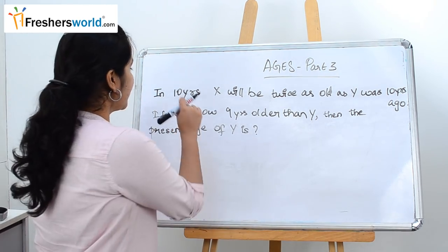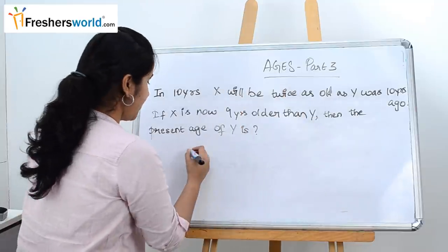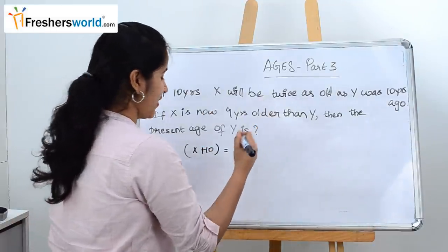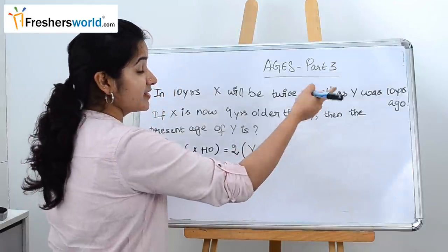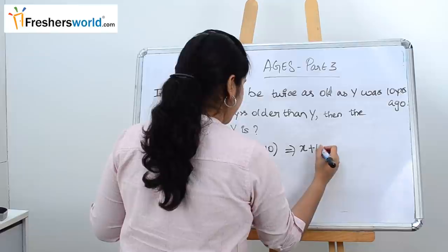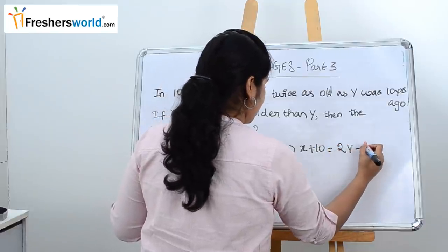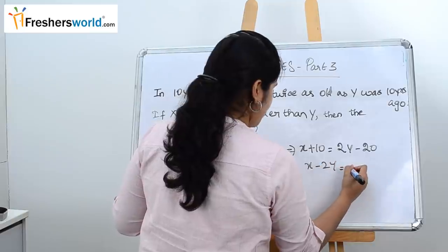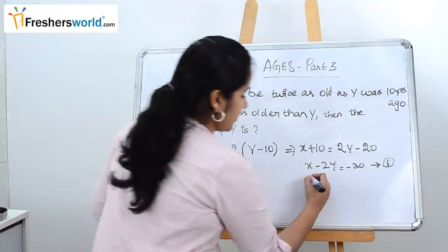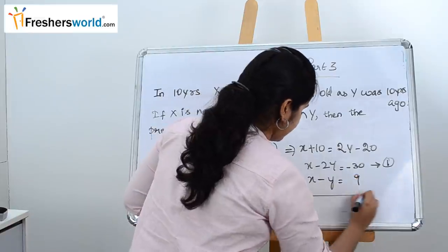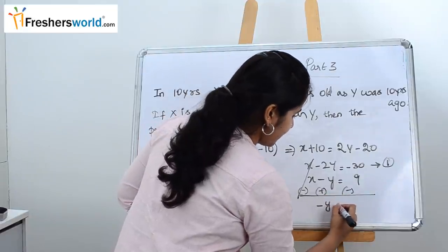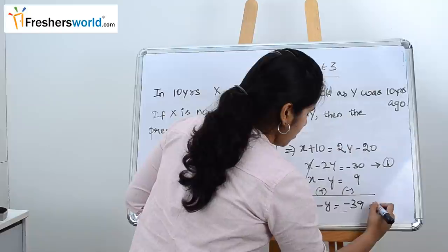Setting up the first equation: in 10 years, x will be (x + 10); twice as old as y was 10 years ago gives 2(y minus 10). So x plus 10 equals 2y minus 20, which simplifies to x minus 2y equals minus 30. The second equation: x is now 9 years older than y, so x minus y equals 9. Subtracting the equations, y equals 39.